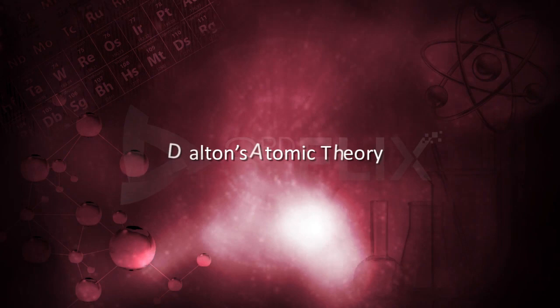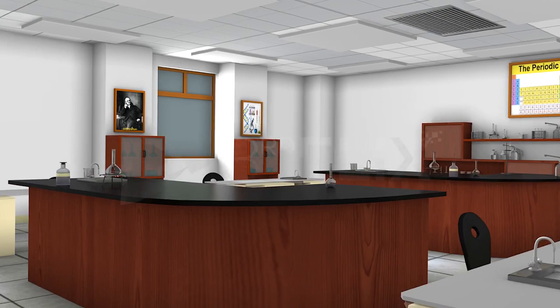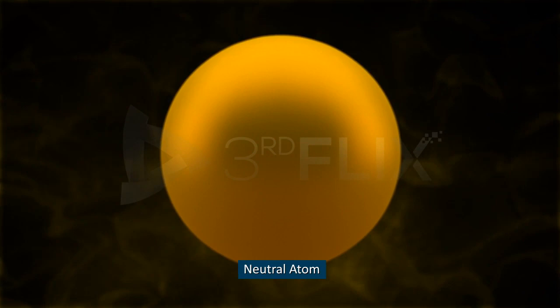Objective: To understand the first scientific atomic theory. The first scientific theory about atoms was put forward by an English chemist, John Dalton, in 1803. He described an atom as a solid, hard sphere which is neutral with no charge on it. Let's understand the postulates given by him in his atomic theory.